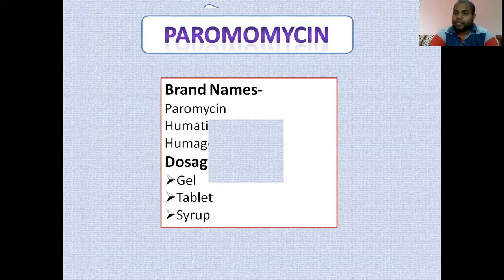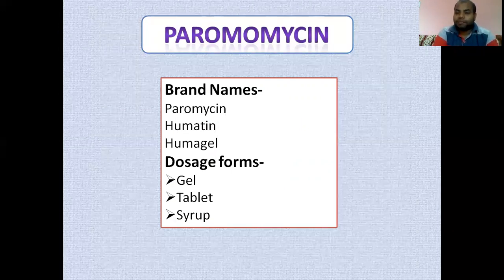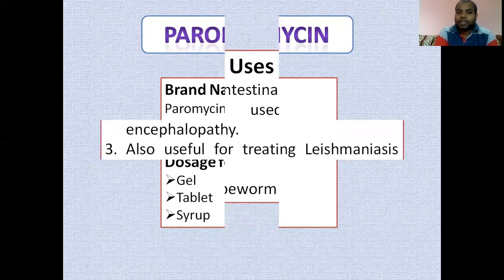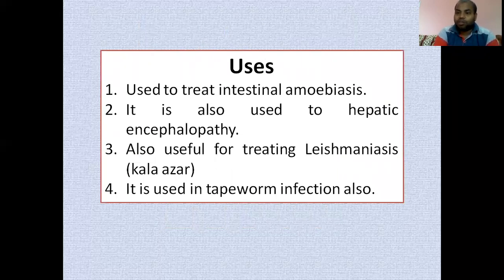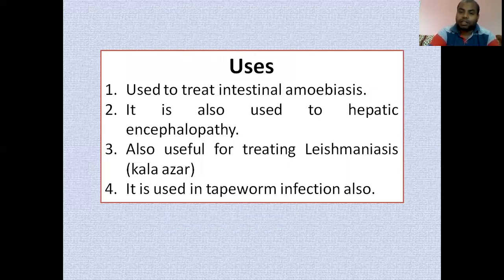Paromomycin is another drug in this class, with brand names Paromomycin, Humatin, and Humagel. It is available in gel, tablet, and syrup forms. Paromomycin is used to treat intestinal amoebiasis, also known as luminal amoebiasis, and is also used for hepatic encephalopathy. Along with hepatic encephalopathy, it is useful in leishmaniasis, also known as Kala-azar, which was a rare disease treated with paromomycin.